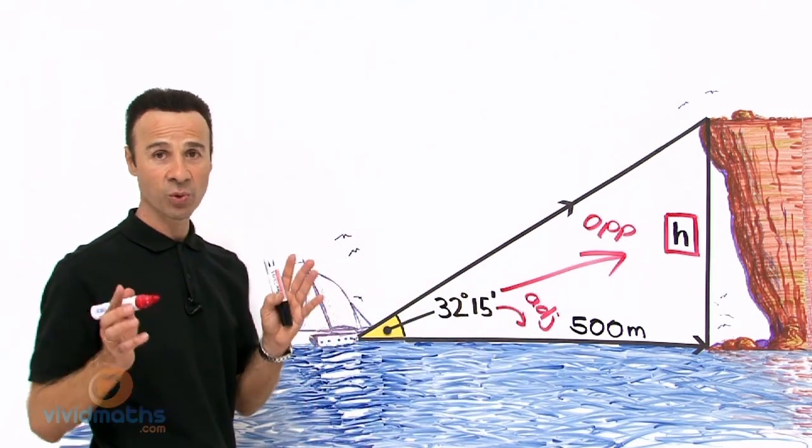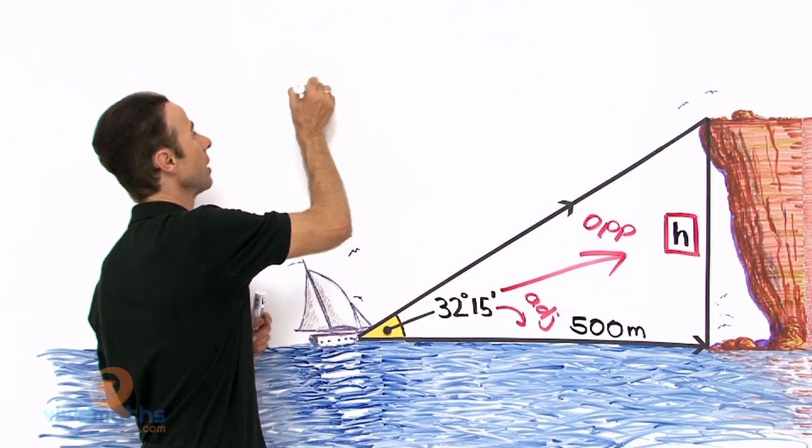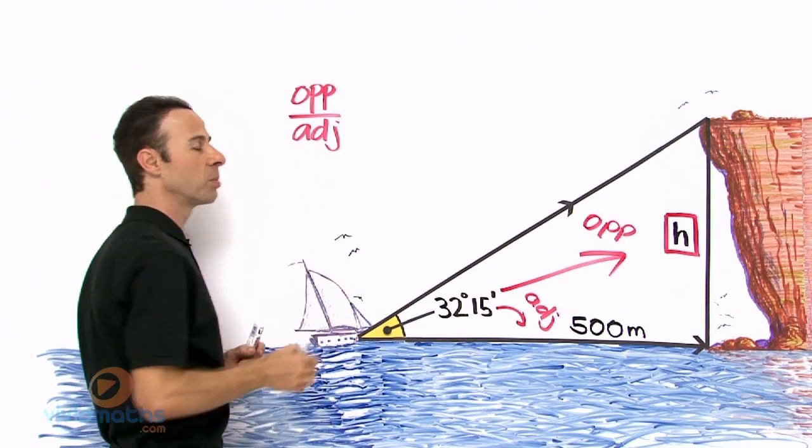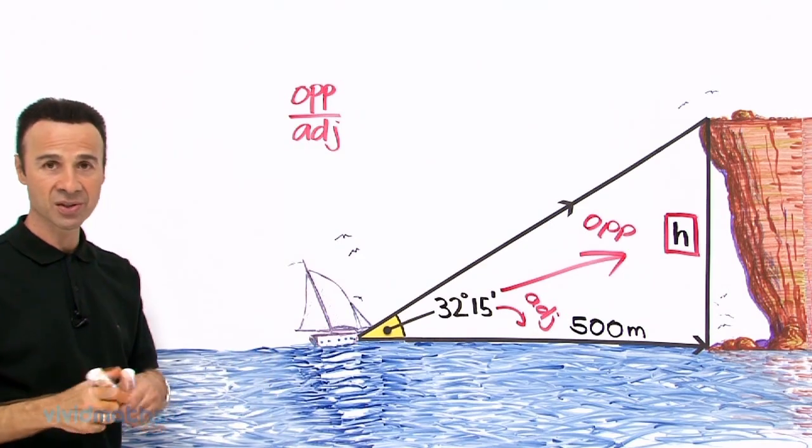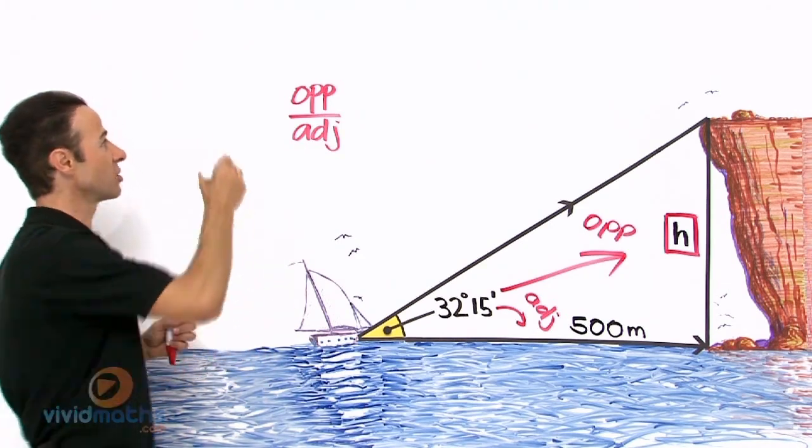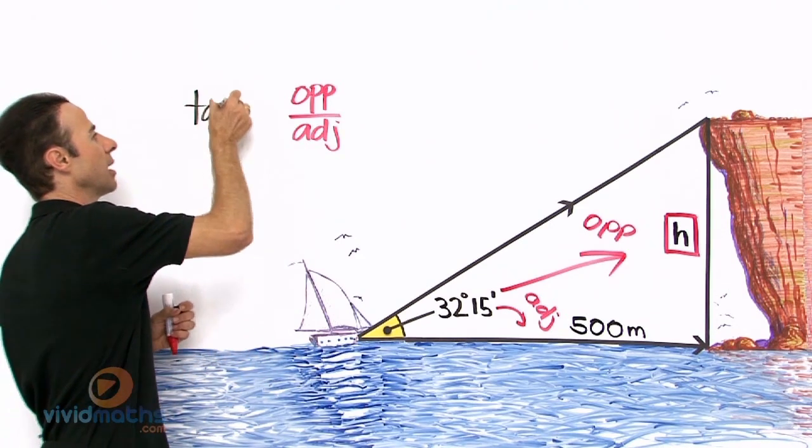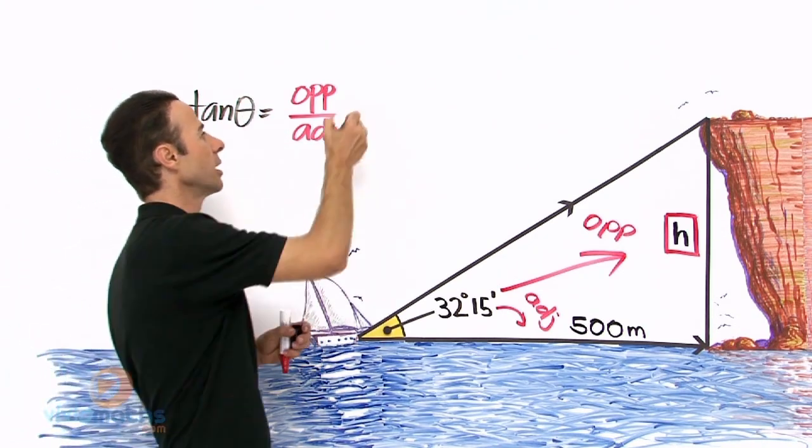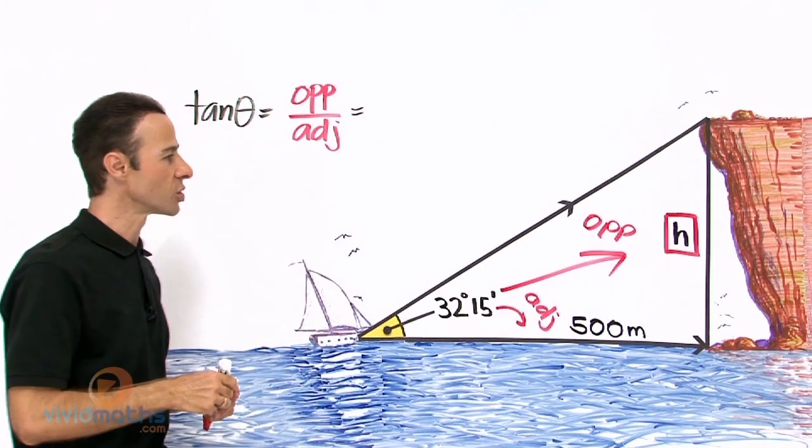So we have established that. That is always the first thing. Let us write that up: opposite over adjacent. Now by now you probably know what opposite over adjacent is. What is it? It is tan. That is right. It is tan theta equals opposite over adjacent.